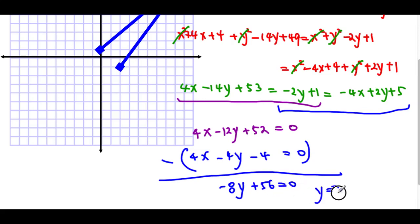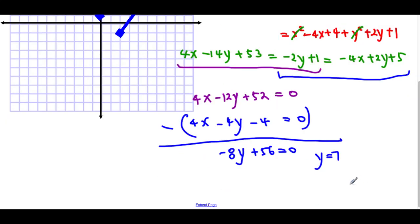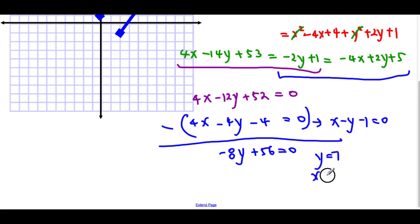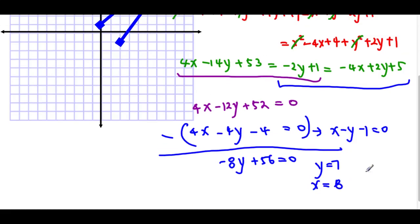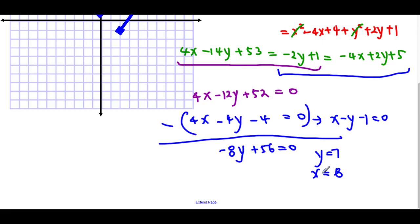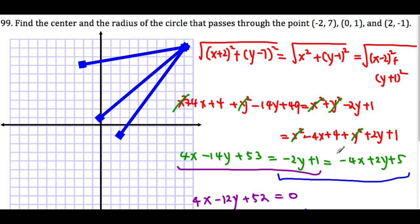And here you can see that y must equal 7. The second equation simplifies to x − y − 1 = 0. When y equals 7, then x must equal 8. So 8 comma 7 becomes our center.